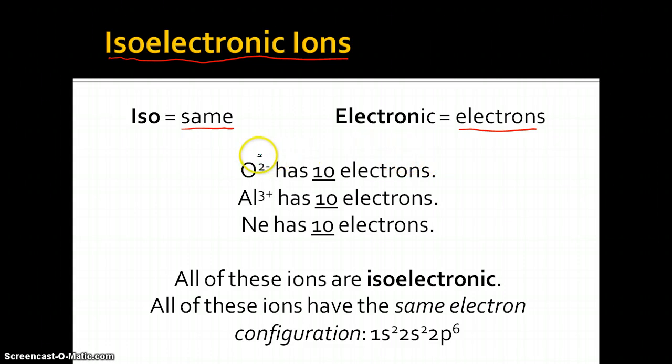So isoelectronic ions are ions that have the same number of electrons. So all you have to do is count the number of electrons in an ion, and then compare if they are the same number. If they are, then they have the same number of electrons, obviously, and the same electron configuration. All three of these guys, their electron configuration is the same exact electron configuration of neon, because they're trying to imitate neon. And they are isoelectronic, because they have the same amount of electrons. And that's it.